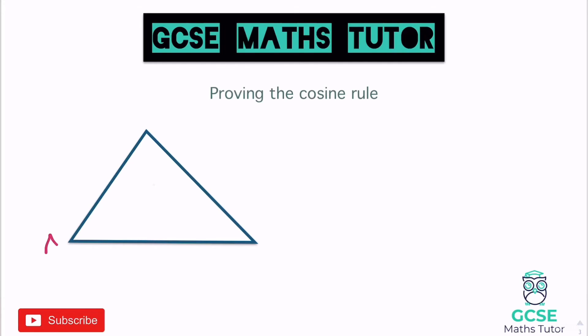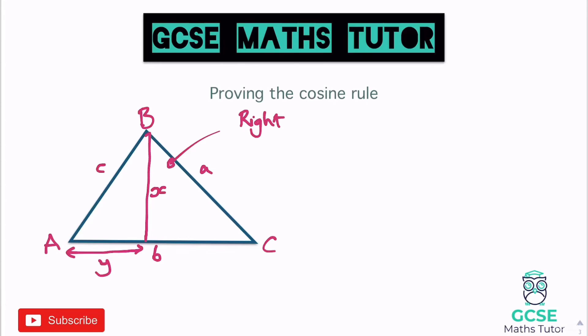For the cosine rule, I'm labeling the triangle with A, B, C and their opposite sides a, b, c. I split it into two right-angle triangles using the height x again. This time I also need to label an additional horizontal length — from A to the foot of the perpendicular — which I'll call y. The full base is b, so the base of the right triangle on the right is b − y.